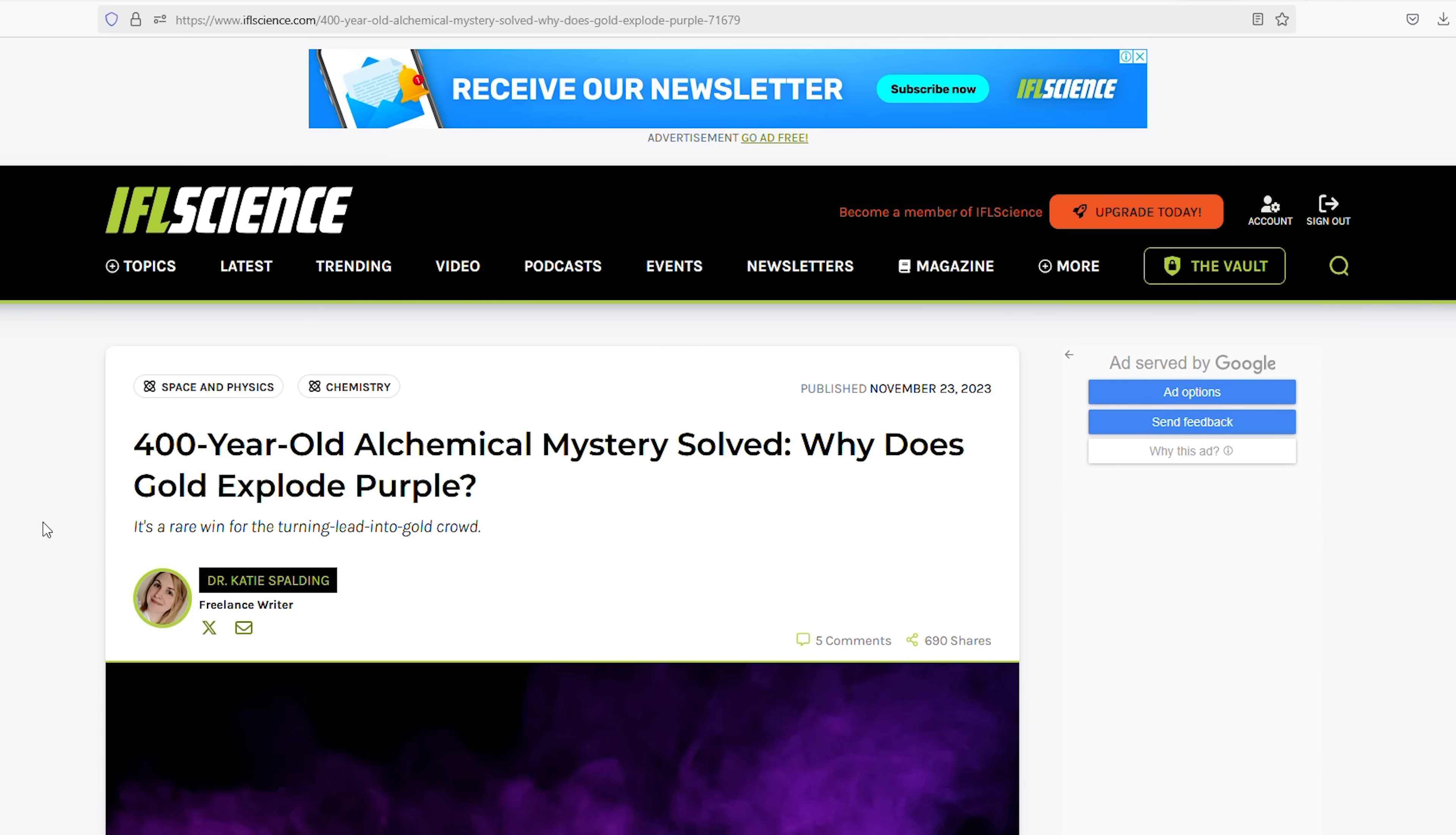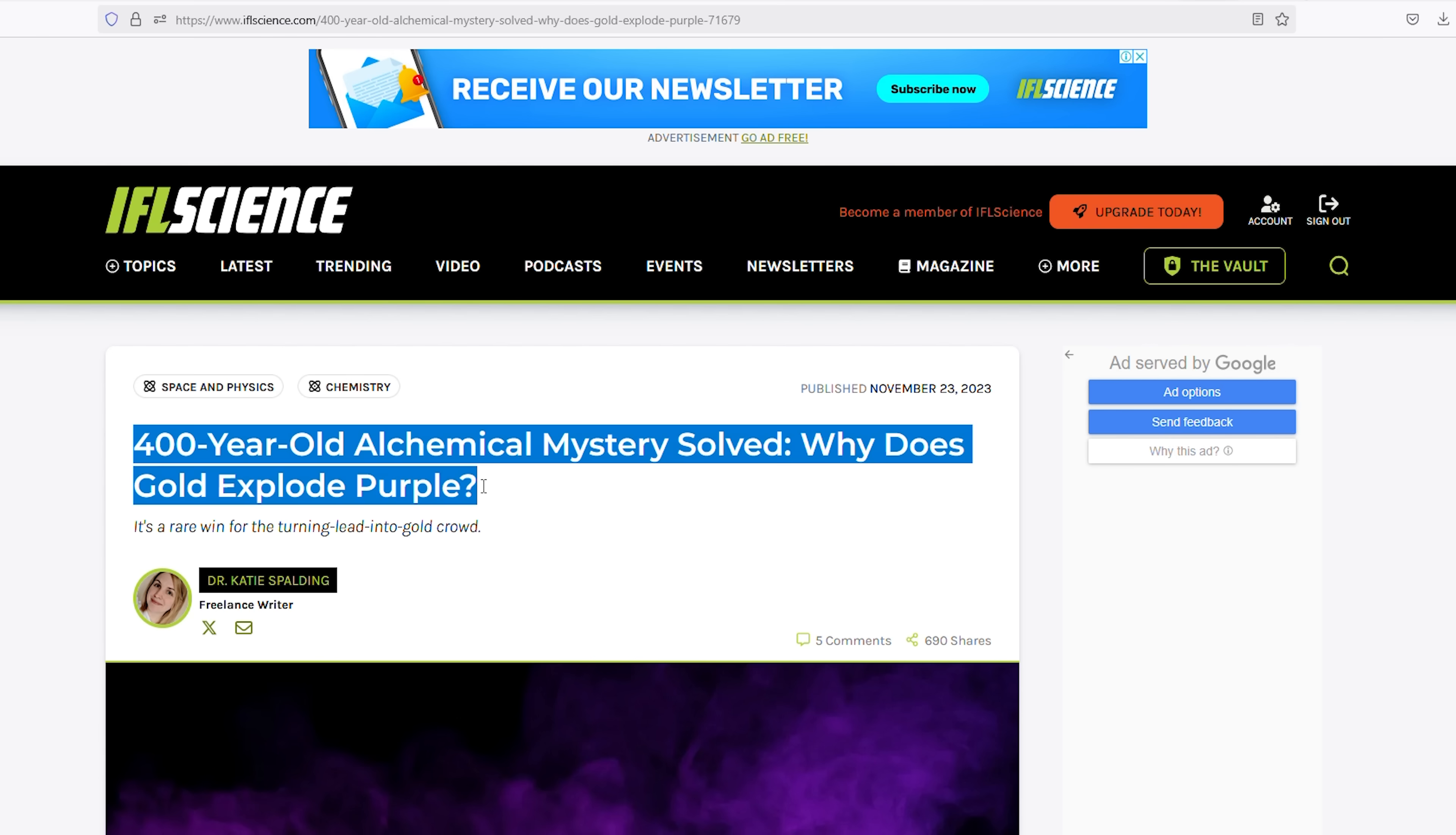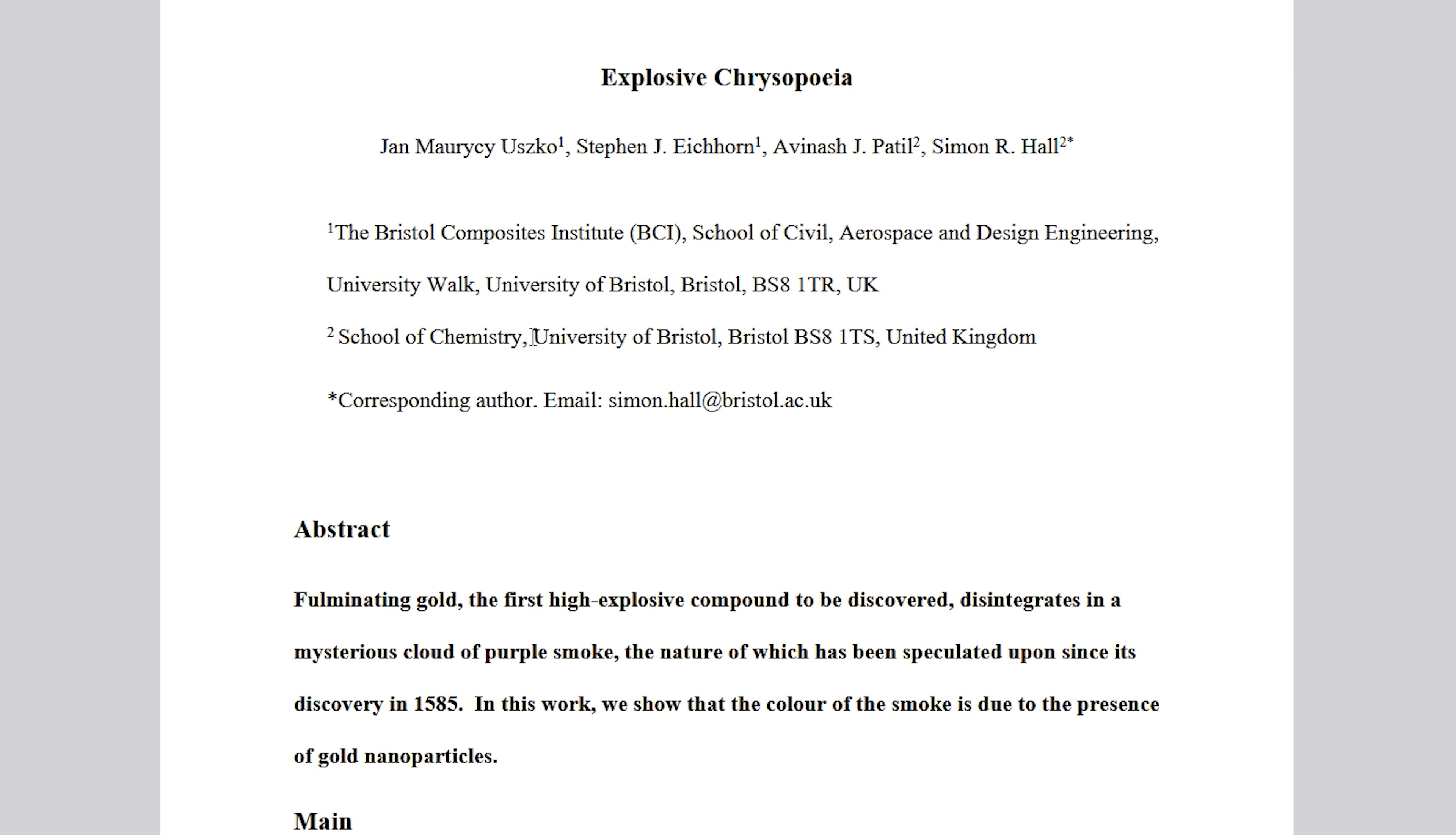Over 500 years ago, alchemists discovered that mixing gold dissolved in aqua regia with an ammonia solution produces a precipitate with explosive properties even greater than gunpowder. What's even more fascinating is that when this substance explodes, it releases purple smoke, a phenomenon that remained unexplained until recently.